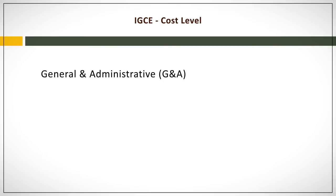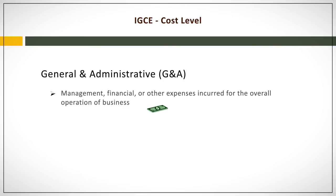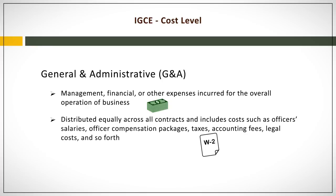General and administrative costs are any management, financial, or other expenses incurred for the overall operation of business. These costs are distributed equally across all contracts and include costs such as officer's salaries, officer compensation packages, taxes, accounting fees, legal costs, and so forth. G&A is typically expressed as a percentage of the total costs before profit or fee.